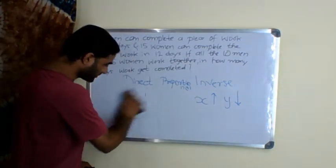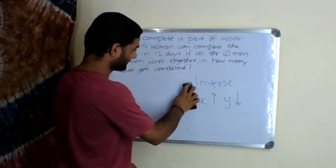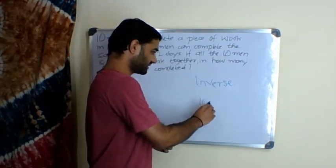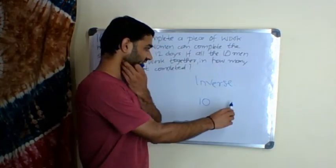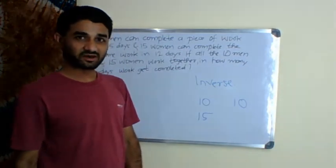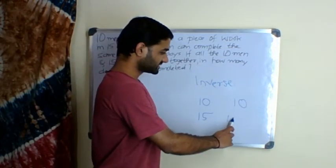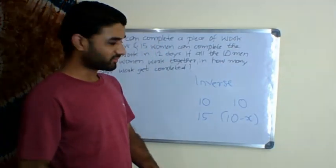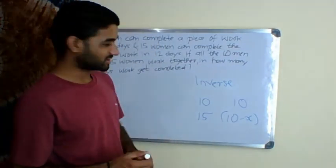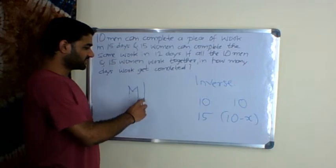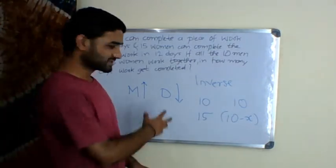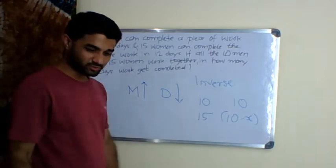In inverse, I remember one thing: suppose you want to build a wall. If there are 10 laborers and they take 10 days, and if the number of laborers is 15, definitely the days will be less than 10. Number of people and number of days are inversely proportional. If you increase men, the days required is reduced.